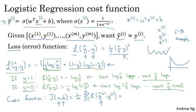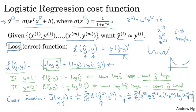And so just to expand this out, this is equal to negative 1 over m sum from i equals 1 through m of the definition of the loss function. So this is y i log y hat i plus 1 minus y i log 1 minus y hat i. I guess I can put square brackets here, so the minus sign is outside everything else. So the terminology I'm going to use is that the loss function is applied to just a single training example like so, and the cost function is the cost of your parameters. So in training your logistic regression model, we're going to try to find parameters w and b that minimize the overall cost function j written at the bottom.